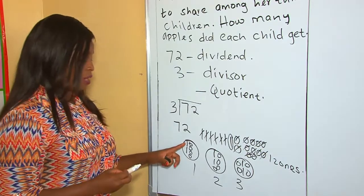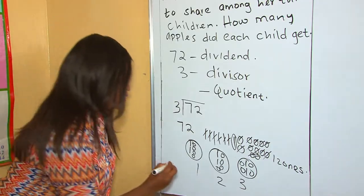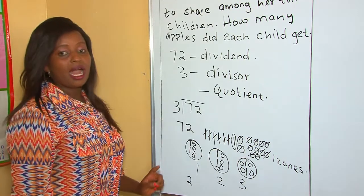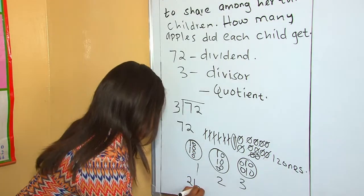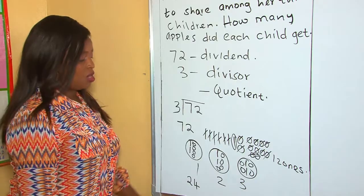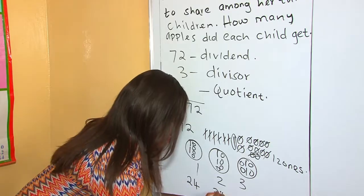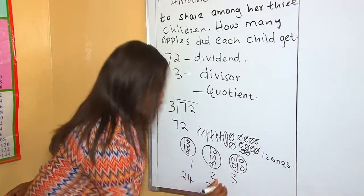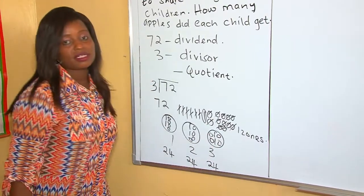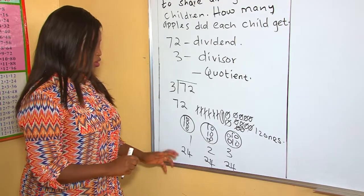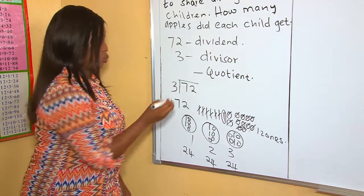Therefore we want to find out how many apples did each child get. The bar represents tens, so how many tens are here? There are two tens. How many ones are here? They are 1, 2, 3, 4, four ones. Also here there are two tens and four ones. Also here there are two tens and four ones. Therefore each child got 24 apples. So now our quotient is 24.